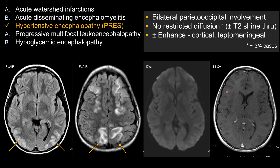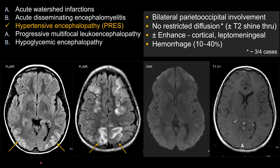For post-contrast sequences in PRES, classically they do not show much enhancement. If enhancement is present, it tends to be mild cortical or leptomeningeal enhancement. In this case, you see no significant enhancement. Sometimes what tricks people about PRES is hemorrhage — up to 40% of the time you can see hemorrhage. It may not be obvious on CT, but you may see it as susceptibility artifact on SWI or GRE.